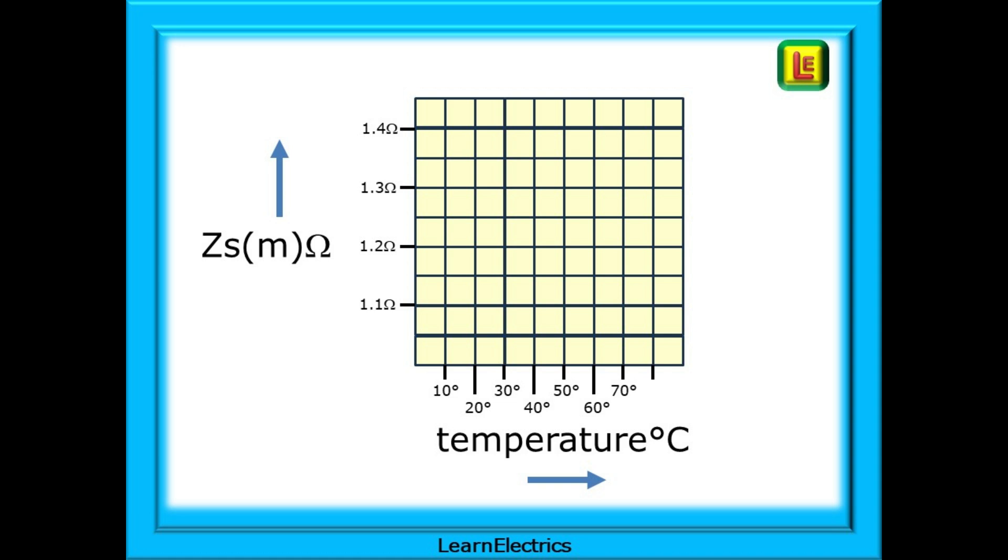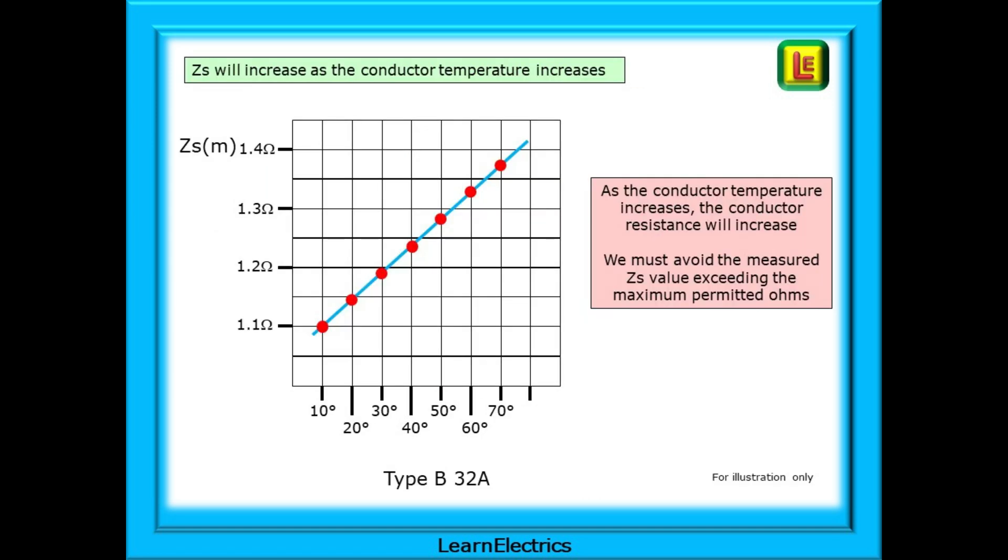Let's begin by constructing a simple graph with the ZS measured numbers going vertically from bottom to top and the temperature in degrees Celsius along the bottom. If we now show the resistance increases against the temperature changes we can see what is happening. As the conductor temperature increases the conductor resistance will increase and we must avoid letting the measured ZS value exceed the maximum permitted ohms for this device.